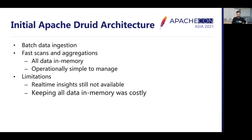With this initial architecture, we were able to achieve fast data scans and aggregations. Since all data was in memory, latency for data access was very low, and due to the distributed nature we could horizontally scale to achieve sub-second query latencies. However, this still did not solve all requirements and had limitations. Due to batch ingestion, real-time insights were still not available. Keeping all data in memory was also turning out to be quite costly.